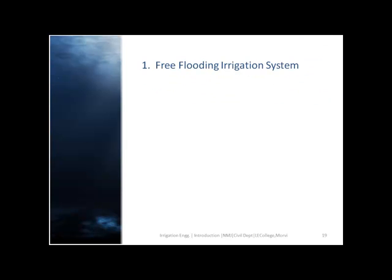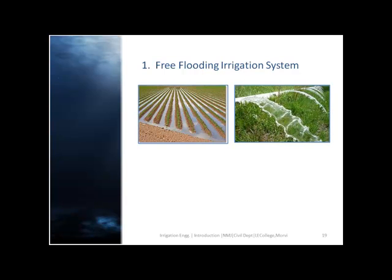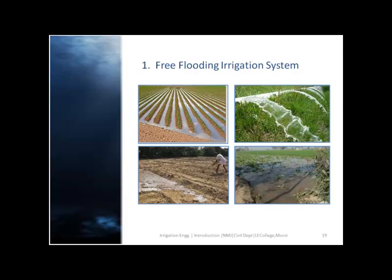The first method is free flooding irrigation system. In this method, ridges are excavated in the field and they may be either on the contour or up and down the slopes. Water from these ridges flows across the field, as shown in the figure.